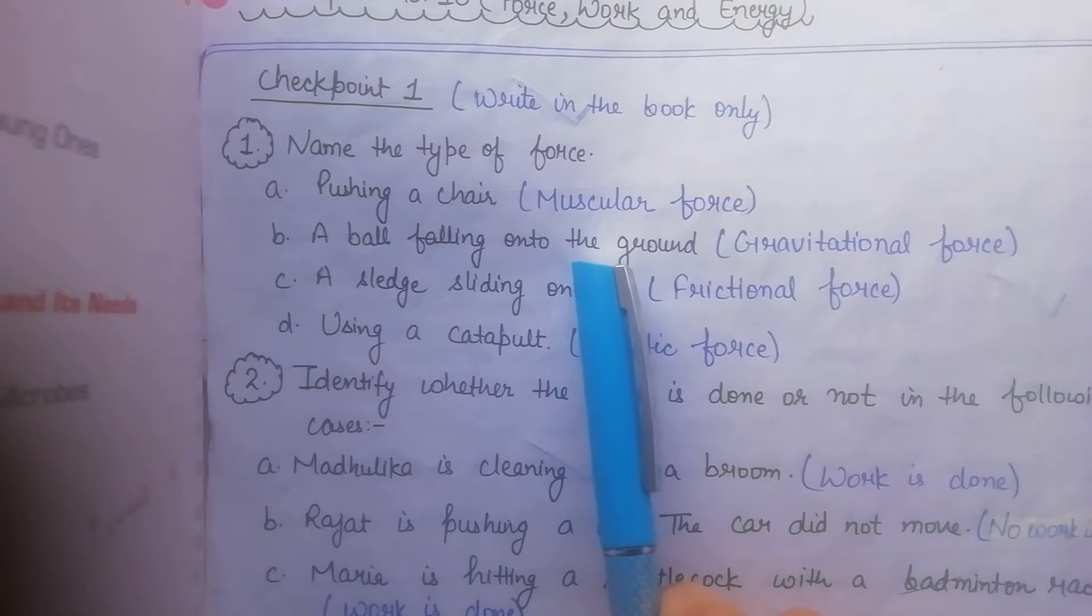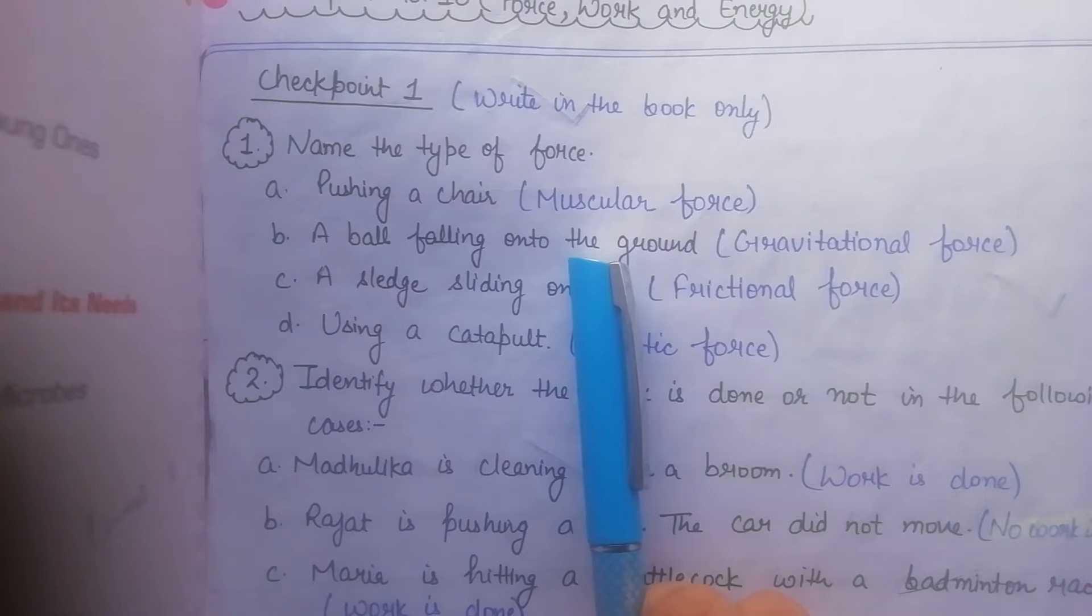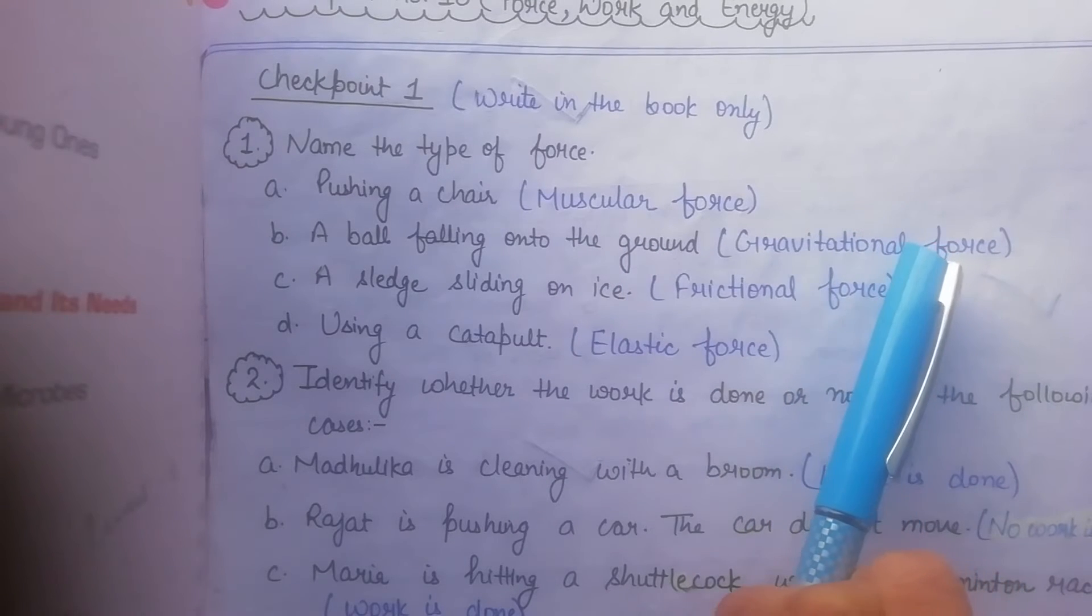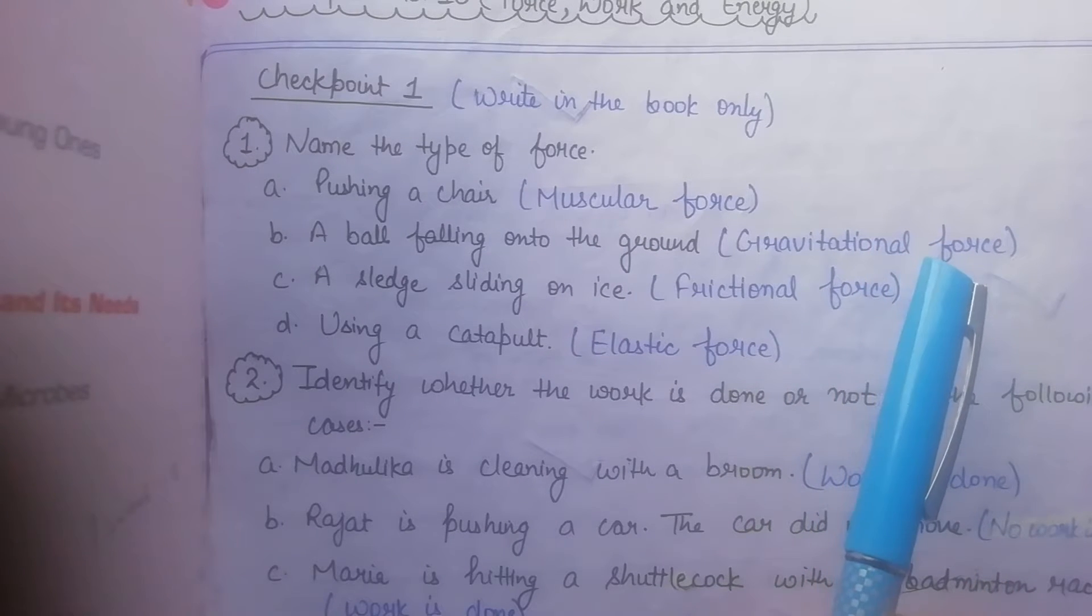A ball falling onto the ground. So when a ball falls on the ground, then which force is gravitational force? Because the ball is falling to the ground, it means that the earth is attracting it. So it is gravitational force.